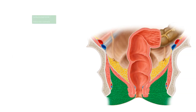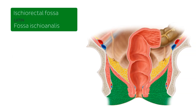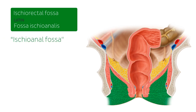The ischiorectal fossa, which we can see here in this mid-coronal plane of the pelvis at the level of the rectum, with our rectum cut in cross-section here — well, actually there are two, so really they are the ischiorectal fossae — are two triangular-shaped spaces situated bilateral to the inferior aspect of the rectum and the anus. We can see them highlighted in green on our slide here, on either side of the anus.